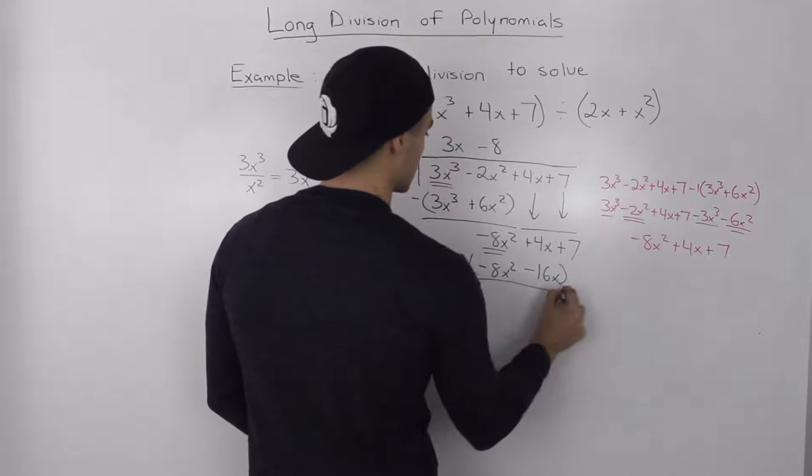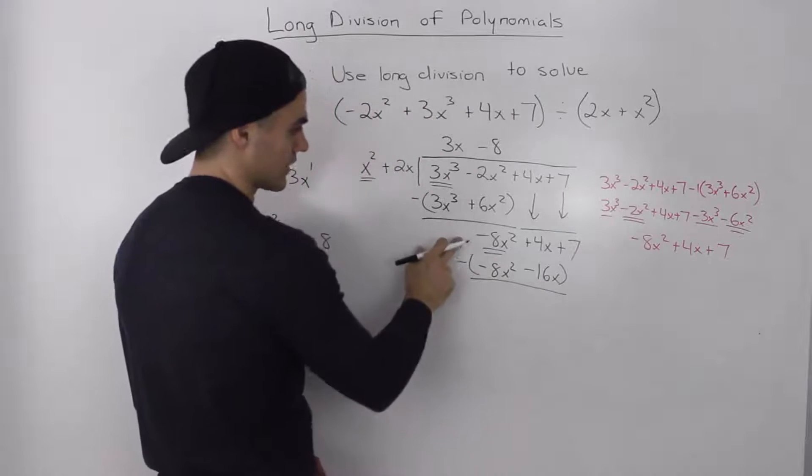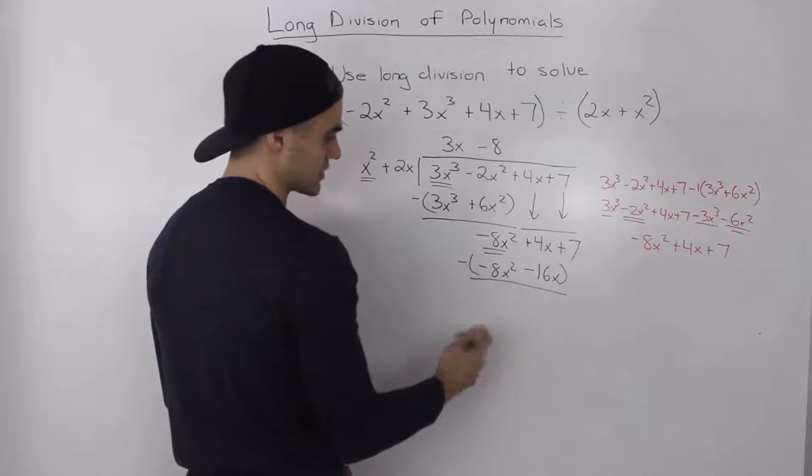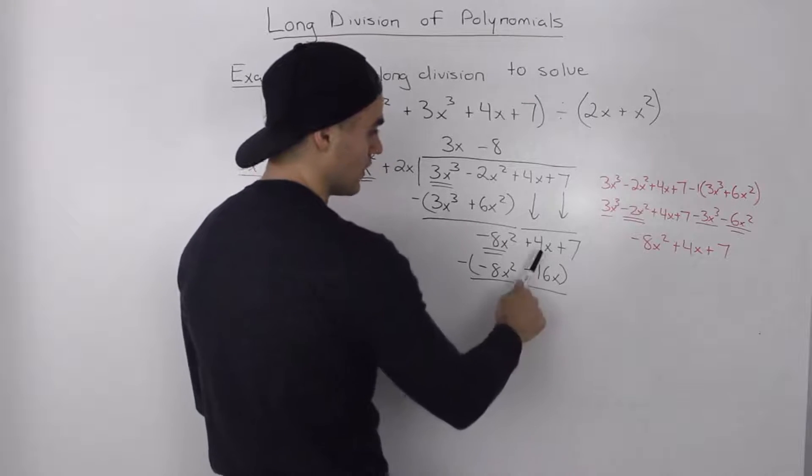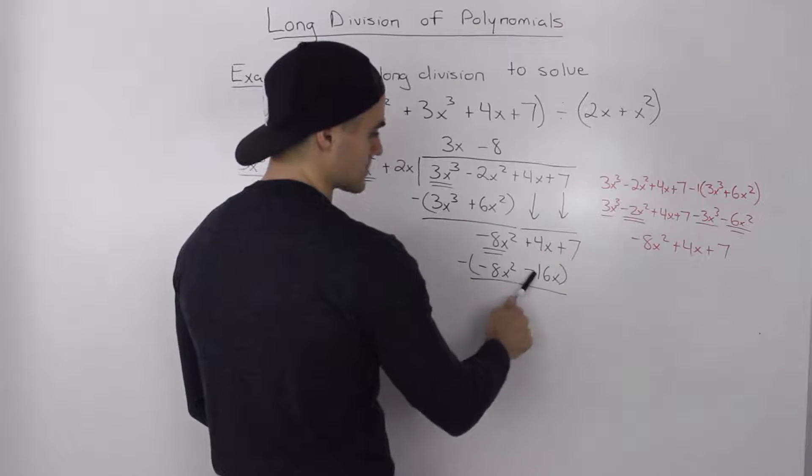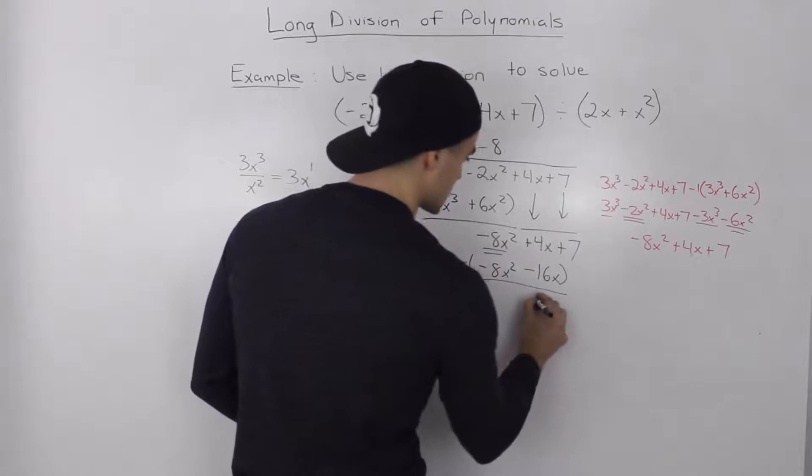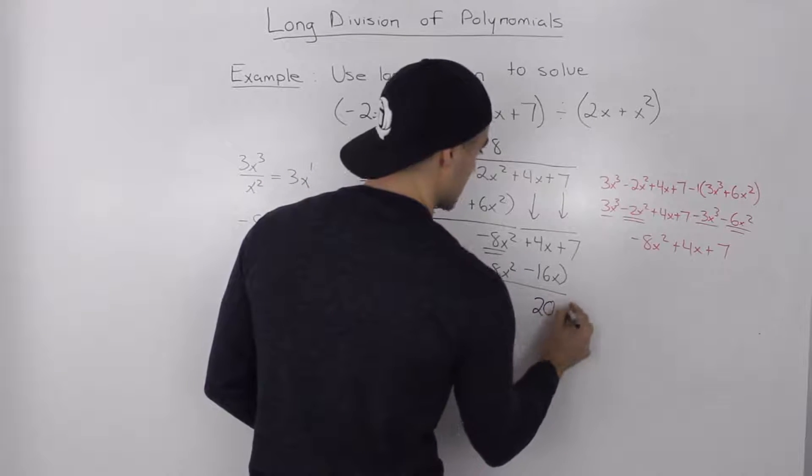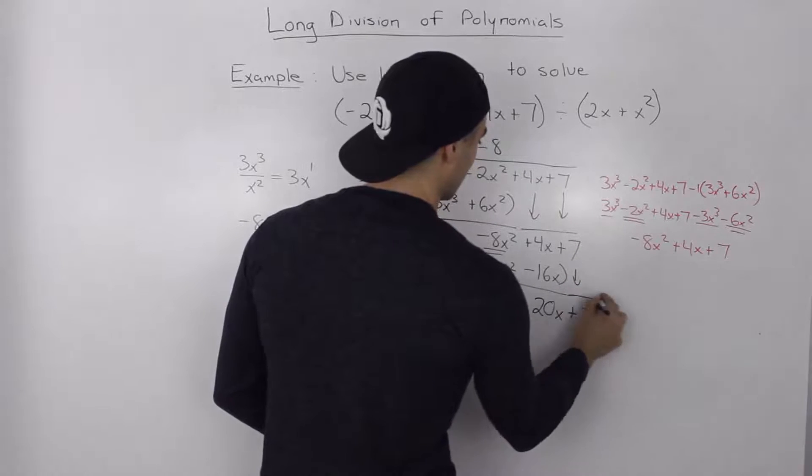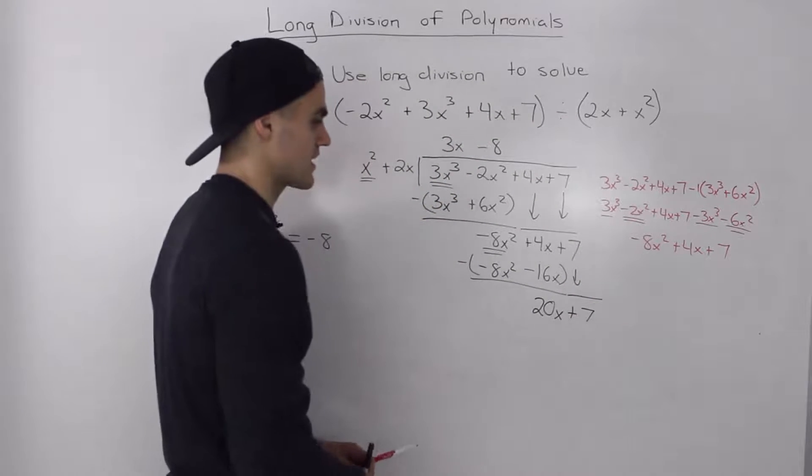So when we subtract these two terms, negative 8x squared minus minus 8x squared, that nets out to 0. 4x minus minus 16x, that's the same as 4x plus 16x, which ends up giving us 20x. Bring the positive 7 down. And we end up with 20x plus 7.